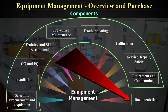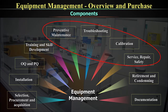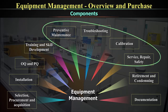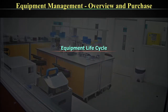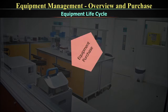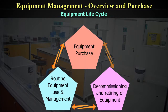As a recap: the first four components belong to purchase and installation, the next four to routine use, the last to retirement and condemnation, and finally documentation. Broadly, the equipment cycle involves purchase, equipment use and management, and decommissioning and retiring. Before going into the details of each, let's get a broad overview of these three stages.